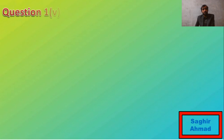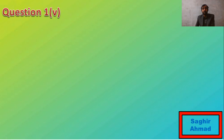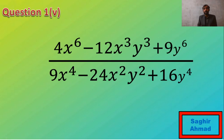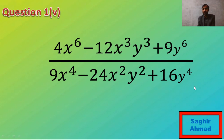Exercise 6.3, first short syllabus question: question number 1, part number 5. That is 4x raised to power 6 minus 12x cubed plus 9y squared, over 9x raised to power 4 minus 24x squared y squared plus 16y raised to power 4. We have to find the square root of this expression by factorization.